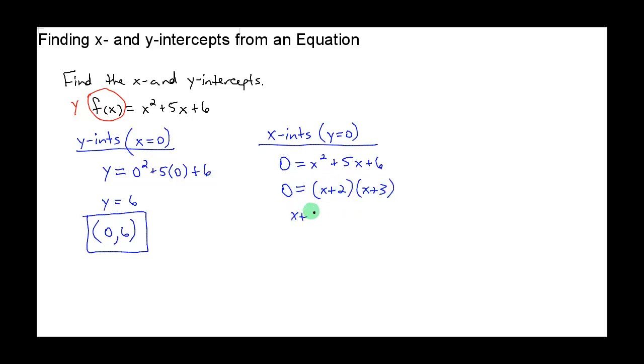So x plus two is zero, or x plus three is zero. So subtract two, x has to be negative two, or x has to be negative three. So if x is, remember, y was zero, and x is negative two, so that's one ordered pair, negative two comma zero, x comma y.